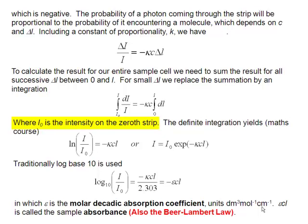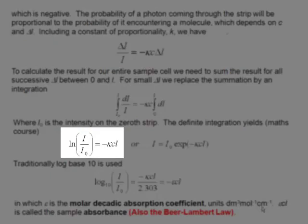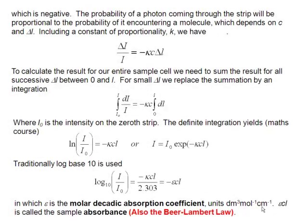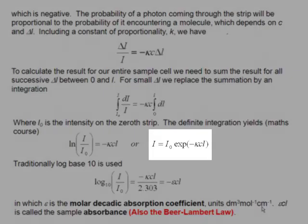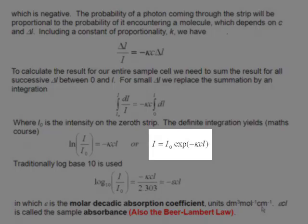And we're now calling our intensity, which hits the zeroth strip, I0. And we integrate over all of those strips until we get to the final intensity, I. And that gives you the equation LN(I over I0) is equal to minus kCl, which we can rewrite as an exponential function: I equals I0 e to the minus kCl.